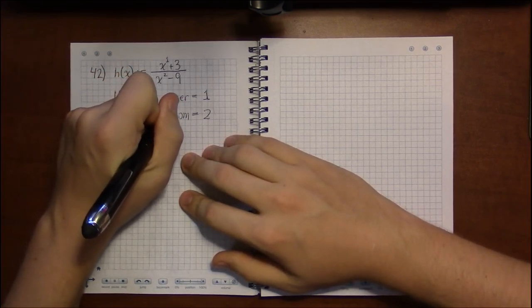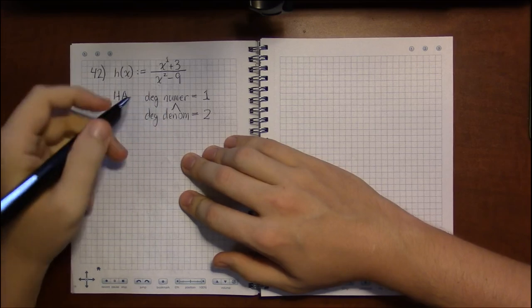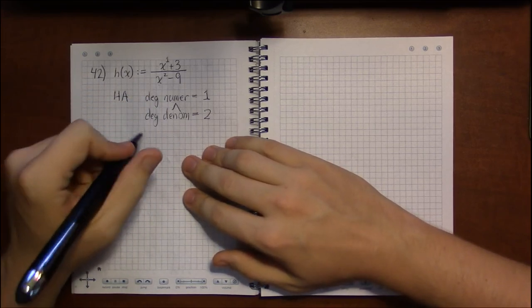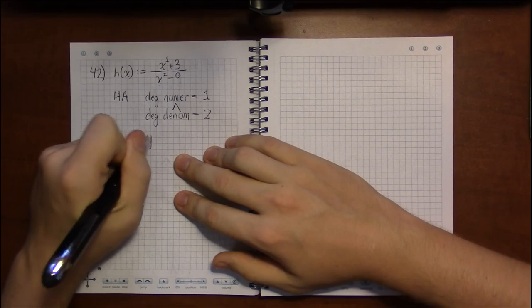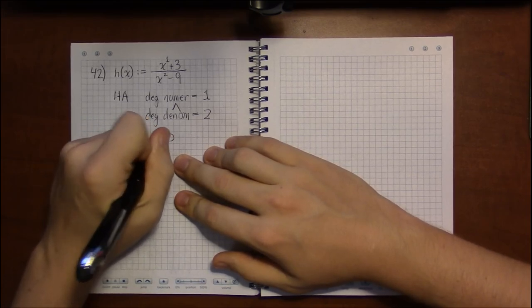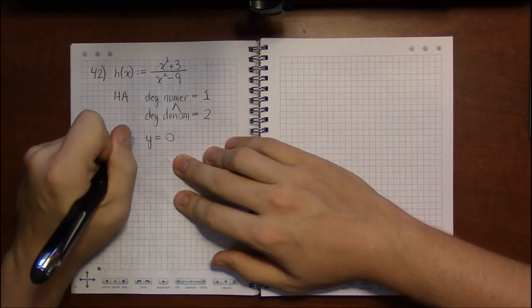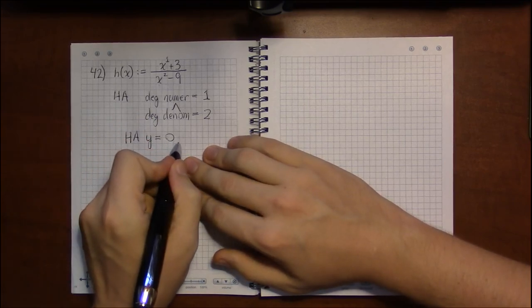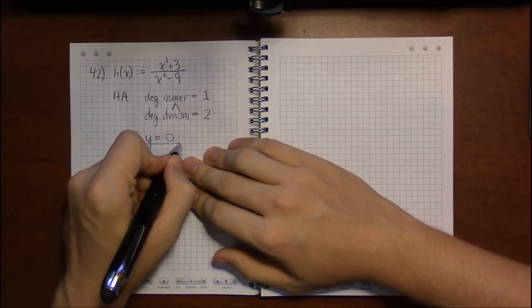So again, we come across the case where the denominator has the larger degree. And when the denominator has the larger degree, the rule is that the horizontal asymptote is just y equals 0. And that's it. That's all there is to it.